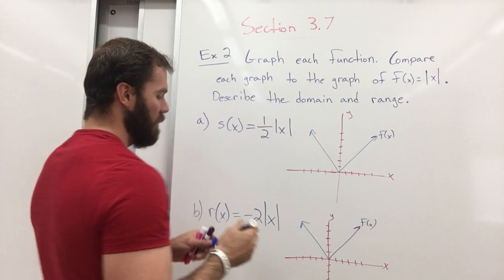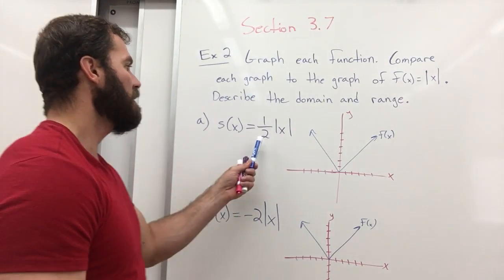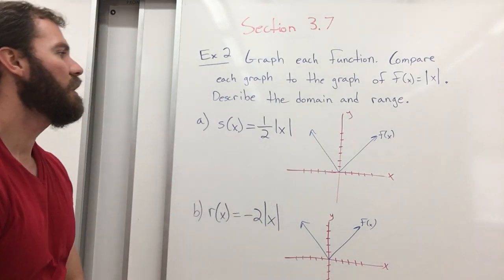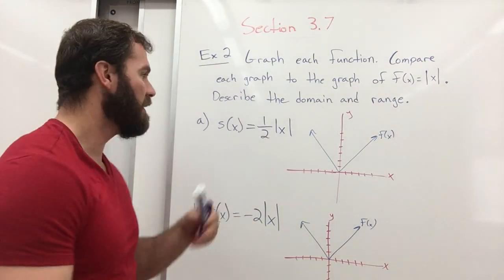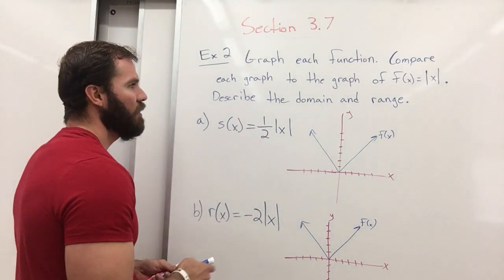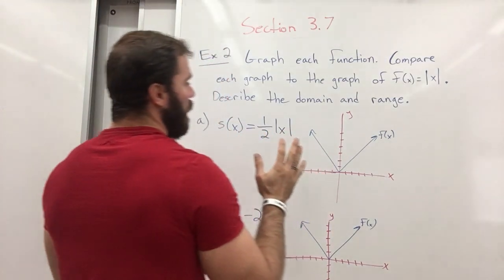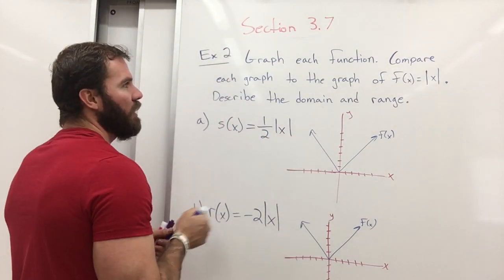This one says 1/2 of the absolute value of x. This is on the outside of the parentheses, so it's going to have a vertical shrink. It's affecting it vertically, a vertical shrink, and very simple. What you could do is, since you're cutting it in half...